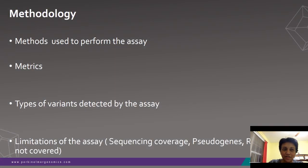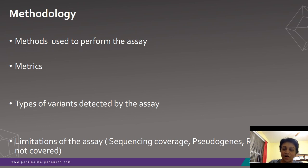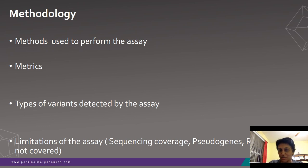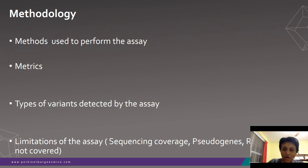Regarding methodology — and this is important for deciding next steps — the method used to perform the assay, the metrics, and the types of variants detected are all key. Probably most important in a negative result is the limitations of the assay itself. A simple example is Gaucher disease: this gene has a pseudogene that cannot be reliably detected by next-generation sequencing alone; Sanger sequencing is required. If the panel doesn't cover it, you have ordered a test that won't give you the answer.